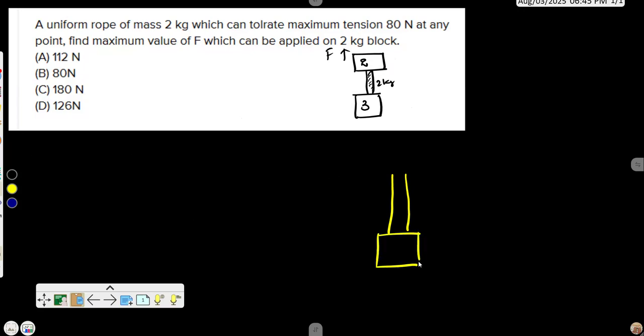The rope is holding this 3 kg block, and the rope weight is 2 kg. So how much is the tension that is present in this rope? It is nothing but the tension is 15 newton. So 15 newton tension is present.